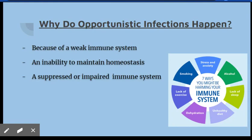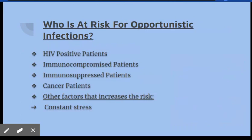Opportunistic infections happen because of a weak immune system. If an individual is not able to fight an infection properly, that individual is going to be known as immunocompromised or immunodeficient — an inability to maintain homeostasis. A suppressed or impaired immune system, such as in individuals living with autoimmune diseases, who voluntarily have their immune system under control to avoid further damage.